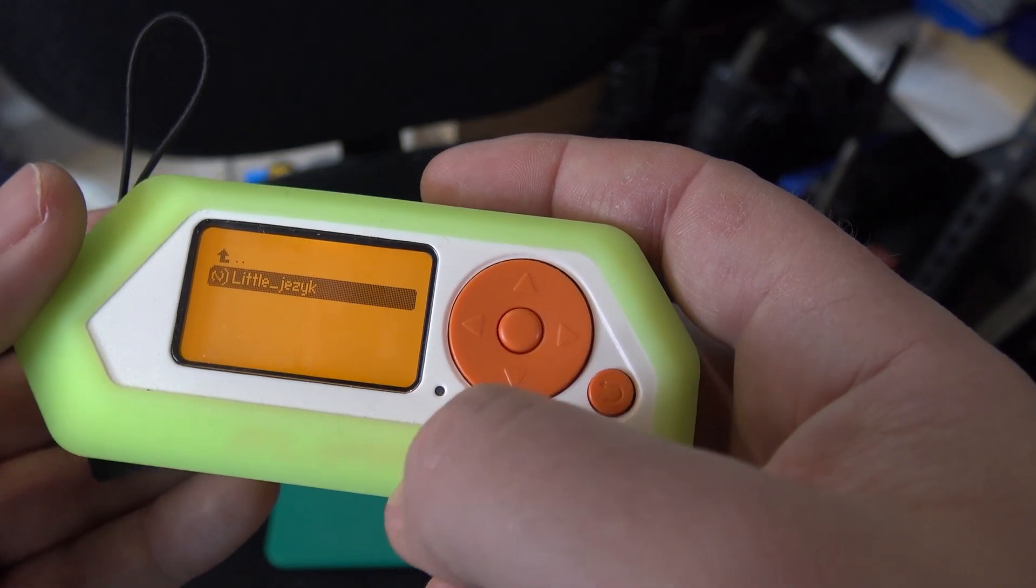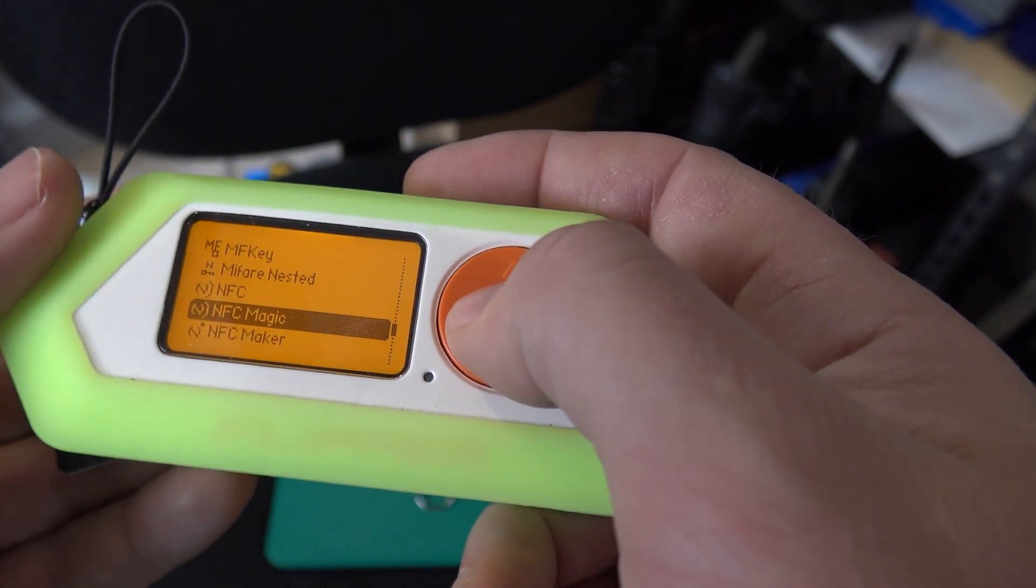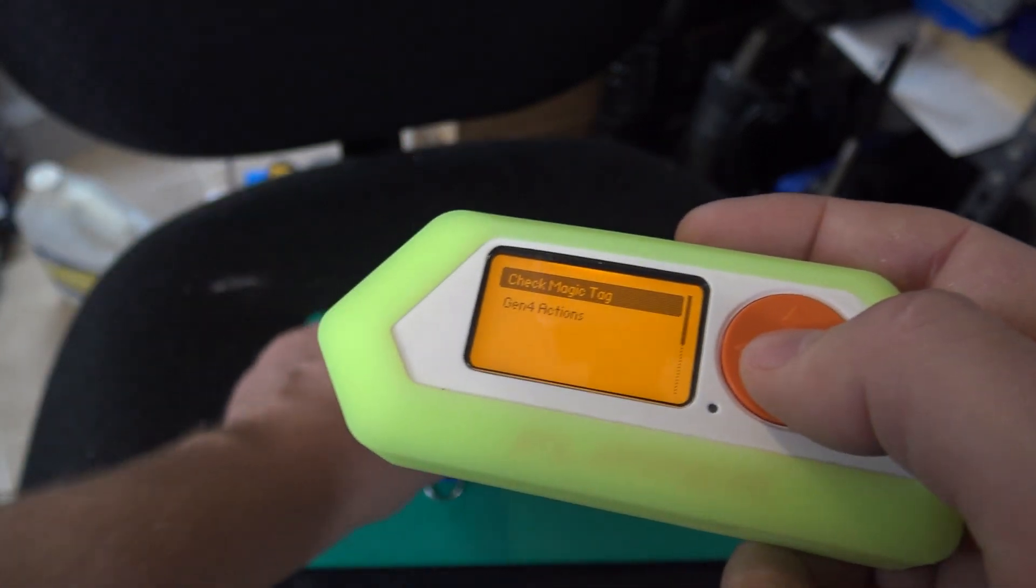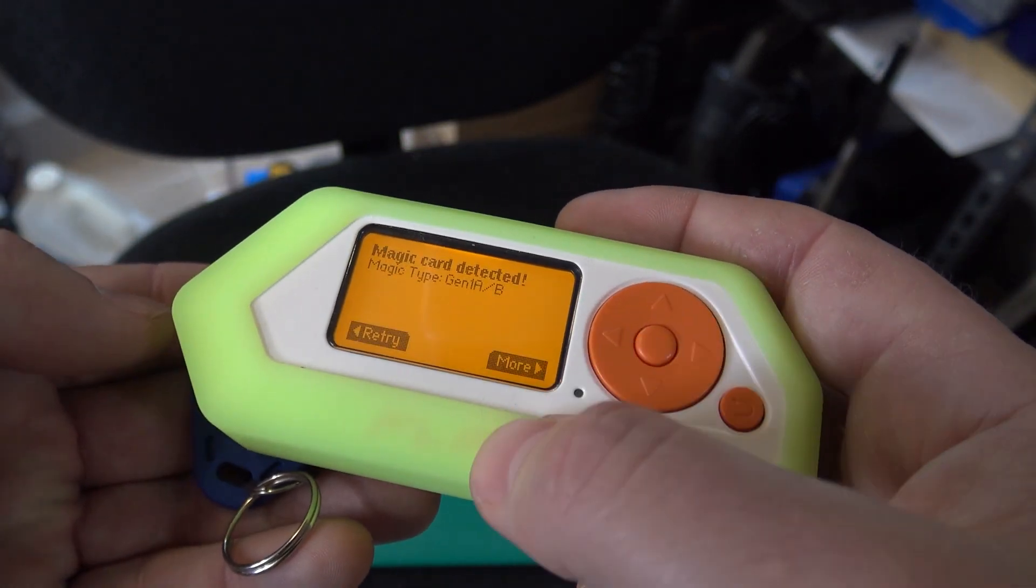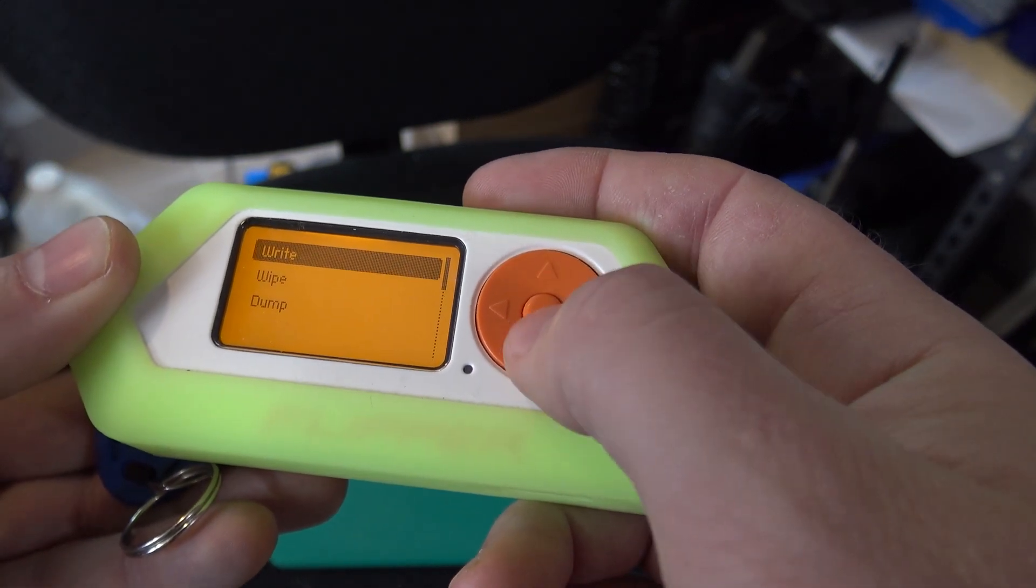And now from here, we can go into the NFC Magic app, and it says check magic tag. Magic card detected. Hit more. We want to write. I'm going to pick the one that we saved.